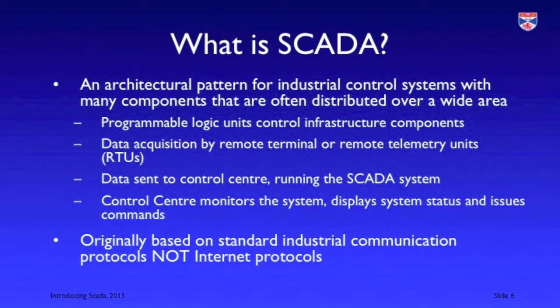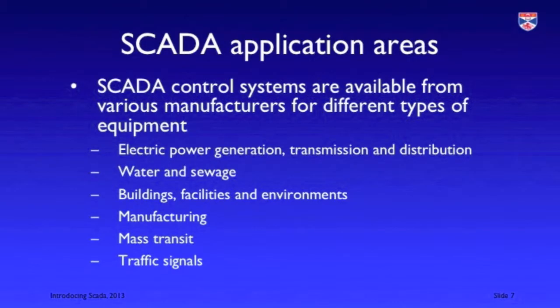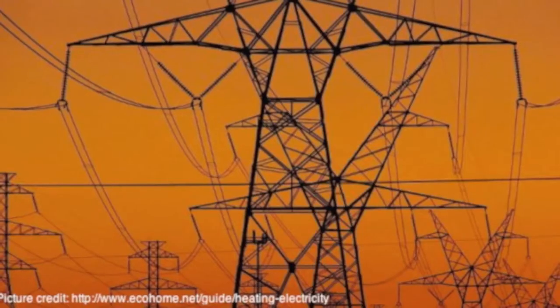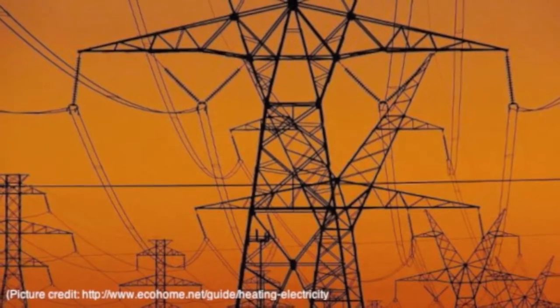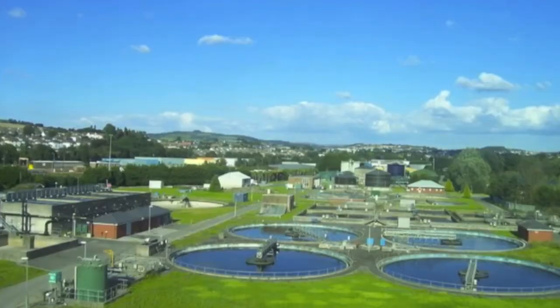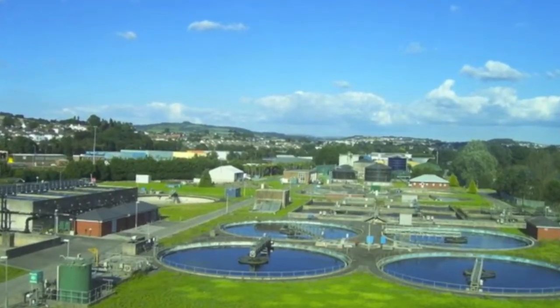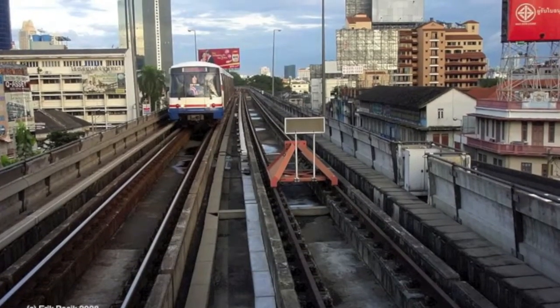SCADA was originally based on industrial control protocols, and that's important because it originally didn't use standard internet protocols. A SCADA system is a type of system, not a specific system, and different manufacturers of controlled equipment have introduced SCADA control systems in their areas. We can get specific SCADA systems for areas such as electricity power generation and transmission, water processing and management, railways, mass transit, traffic lights and motorways, buildings, facilities and the environment, and manufacturing.